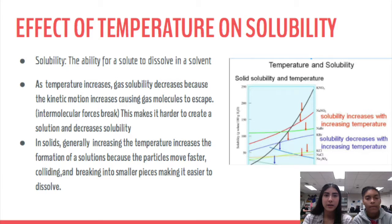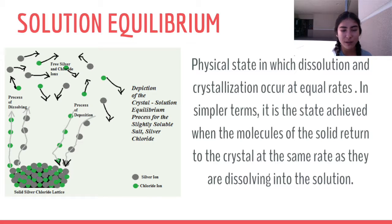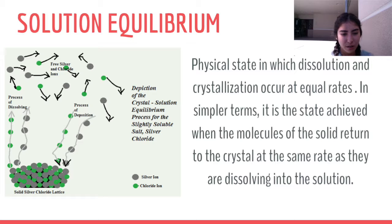An example of temperature increasing solubility in solids is our snow globe experiment: we put a solid substance in water and heated it on the Bunsen burner until it reached solution equilibrium and dissolved. Solution equilibrium is a physical state in which dissolution and crystallization occur at equal rates — molecules of the solid return to the crystal at the same rate as they dissolve. For example, with sodium chloride, the molecules dissolve at the same rate as they crystallize.